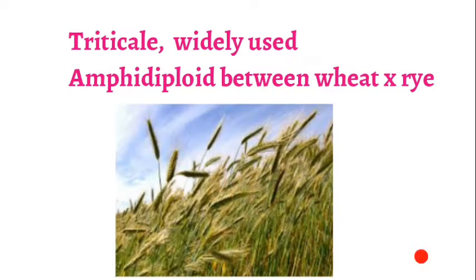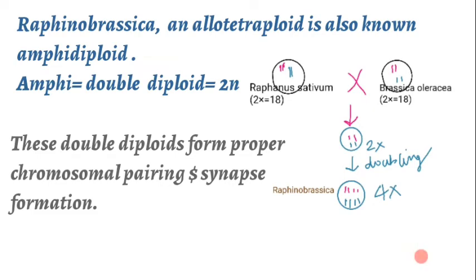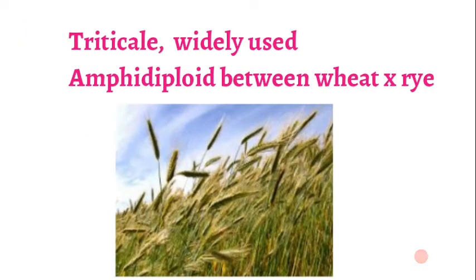Triticale is a widely used amphidiploid between wheat and rye. Amphidiploid means the chromosomes from wheat and the chromosomes from rye each have their own homologous chromosome, which is why we call it an amphidiploid. Thank you very much friends.